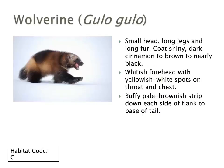The wolverine is almost bear-like in appearance. It has a small head with long legs and long fur. Its coat is very shiny, dark brown on top, ranging to almost very light cinnamon on the bottom in a very characteristic pattern. It has a brownish stripe down each side of the flank to the base of the tail, very large wide paws, and a very voracious appetite.